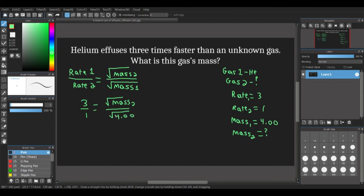Lucky for us in this question, the square root of 4 is just 2. So we get 3 over 1 equals the square root of mass₂ over 2. If we didn't have a perfect square, we would have to write the decimal.